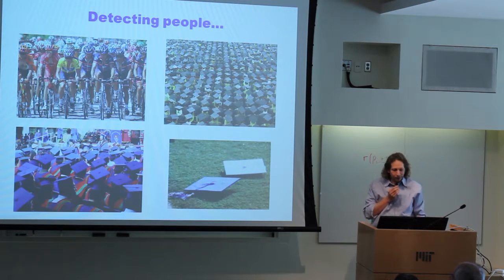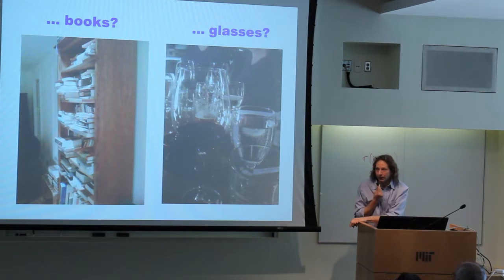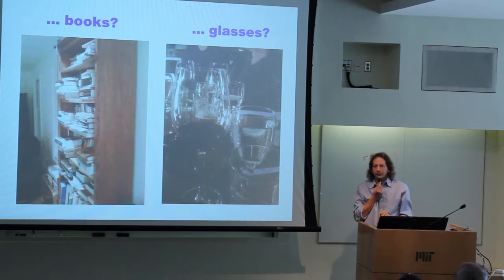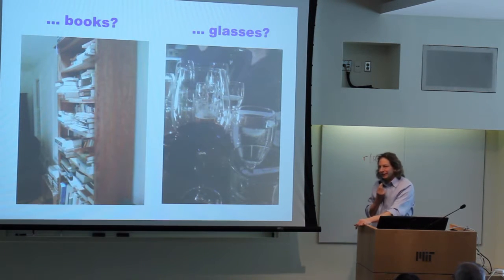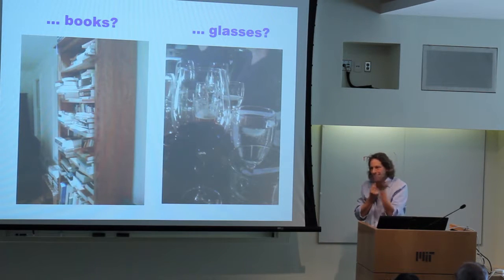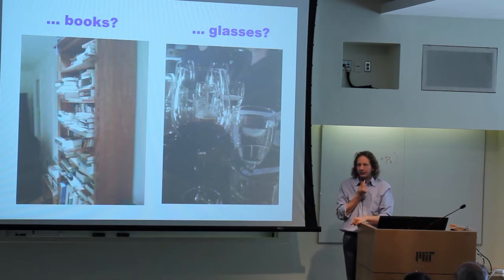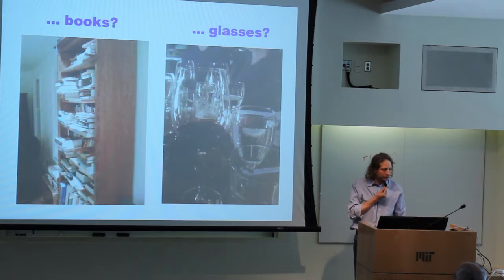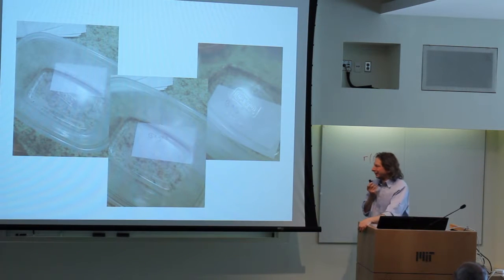Yet somehow if I said 'point to all the people in one of these scenes,' you could do it. Or if I said 'detect all the books in the scene on the left, or detect all the glasses — wine glasses, beer glasses, water glasses — in the scene on the right,' you can do that. How many glasses do you think there are in this scene? Just shout out a number. 7 to 13 — the mean is about 10. How did you do that without reasoning about the 3D structure of the scene and the way light goes through these objects?